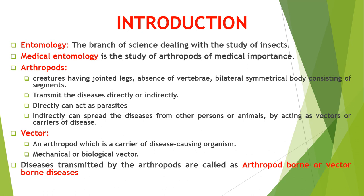What are arthropods? Arthropods are small creatures having jointed legs, absence of vertebrae, and a bilaterally symmetrical body consisting of segments. The arthropods transmit diseases either directly by acting as a parasite, or indirectly by acting as vectors or carriers of disease. A vector is an arthropod which is the carrier of a disease-causing organism. For example, the mosquito in case of malaria.